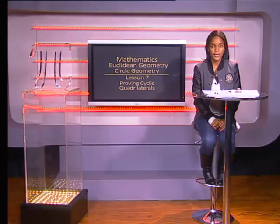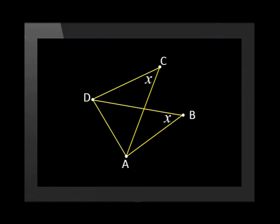The third way is an extension of the theorem that states that an arc subtends equal angles at the circumference. If a line segment subtends equal angles at two vertices, then all four vertices form a cyclic quad.